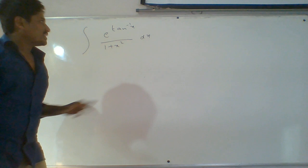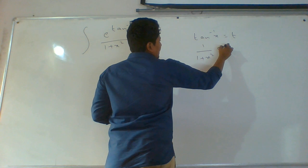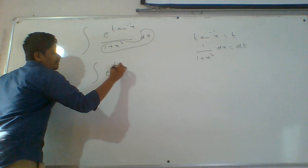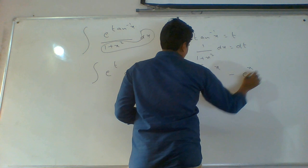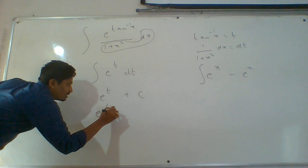If we consider tan inverse x as t and apply derivative on both sides, we get 1 by (1 plus x square) dx equals to dt. So dx by (1 plus x square) can be replaced by dt, and in the place of tan inverse x we put t. The integral becomes e power t dt. The formula for integral e power x is e power x, so for e power t it is e power t. Substituting back, t is tan inverse x, giving e power tan inverse x.